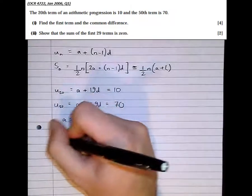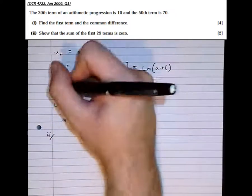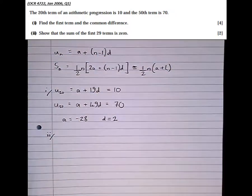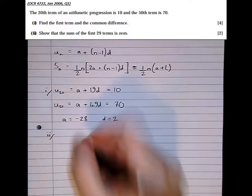Okay, part 2. And that was part 1. Part 2, show that the sum of the first 29 terms is 0.